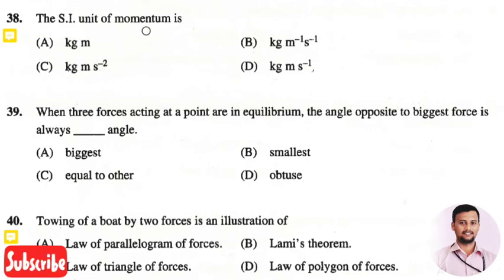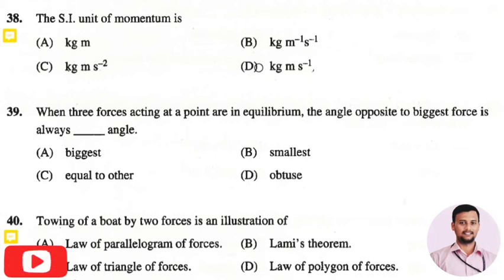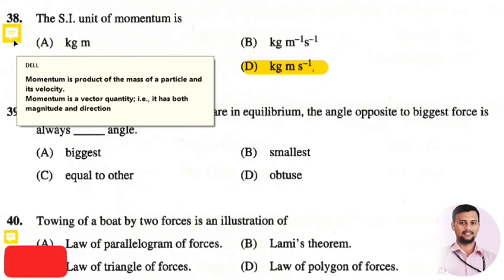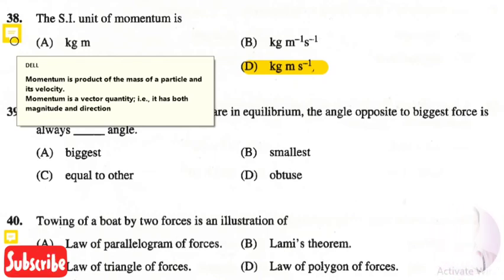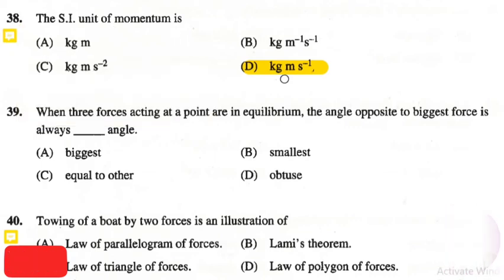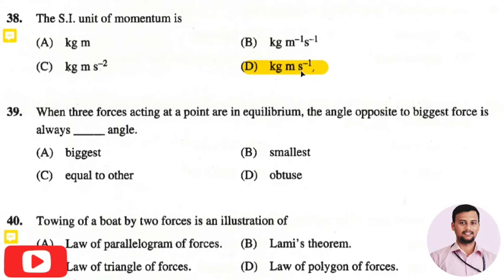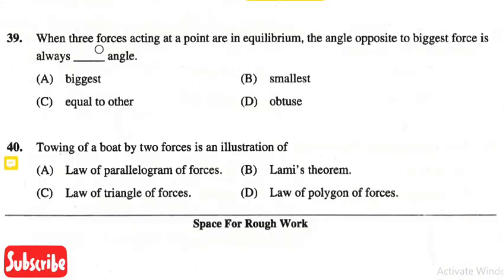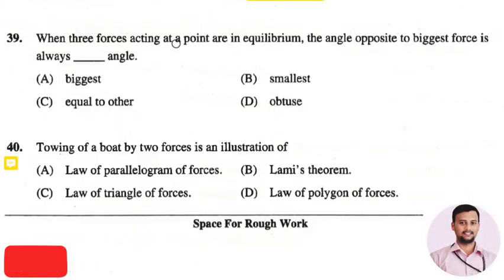The next question is: the SI unit of momentum is — the right answer is option four: kg·m/s. Momentum is the product of the mass of a particle and its velocity. It is a vector quantity, having both magnitude and direction, and its SI unit is kg·m/s.